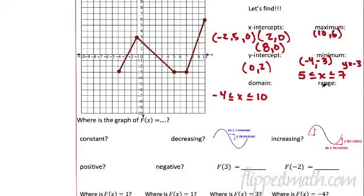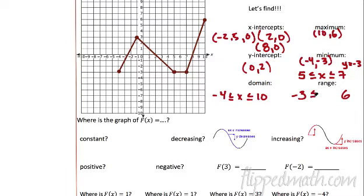Now the range — those are the y values. Where's the lowest y value? We already talked about that — it's right here. So the y values used to graph this go all the way up to the maximum, which is six. So we're going from negative three all the way up to six. The way we write that: negative three up to six, using a compound inequality because it tells everybody every value in between from negative three all the way up to six. That's what the range is.